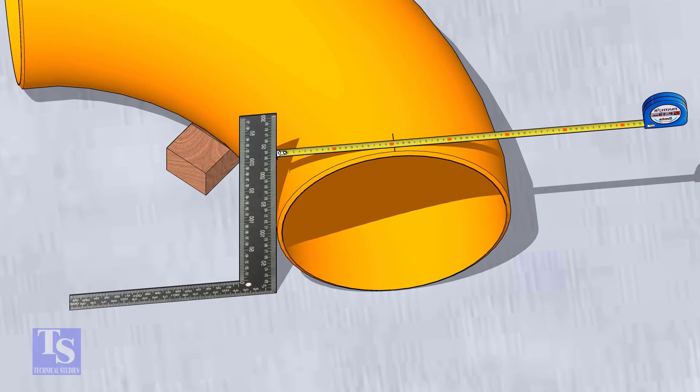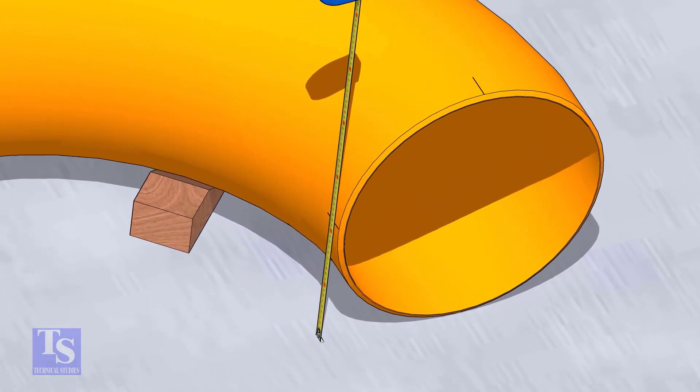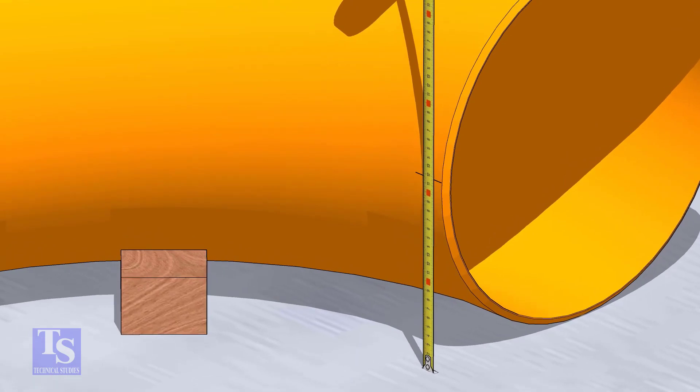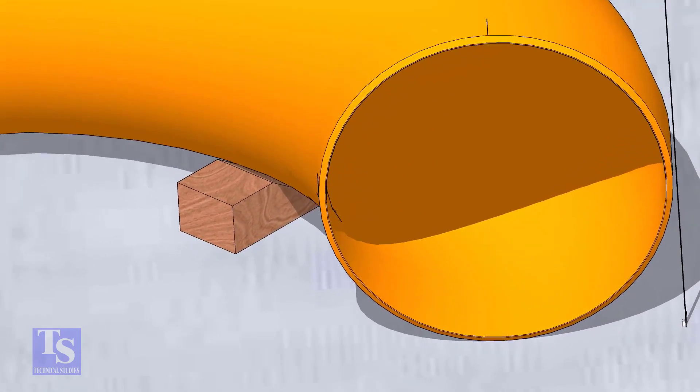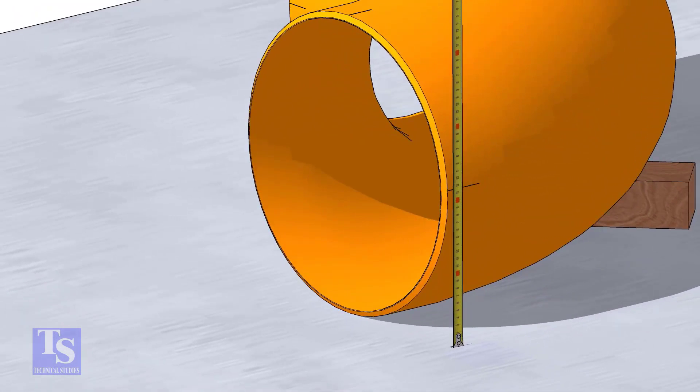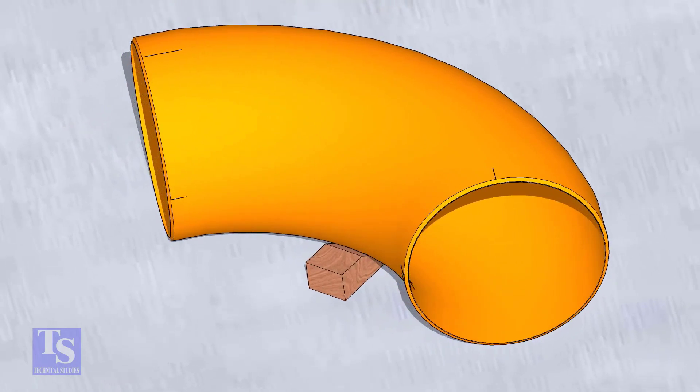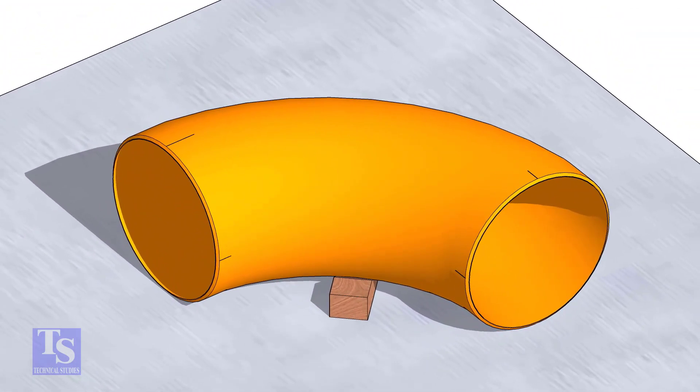Mark half diameter from the plate to the elbow on both sides as shown. Repeat the process and mark the quarters on the other end of the elbow. Rotate the elbow and mark the bottom side quarter also.